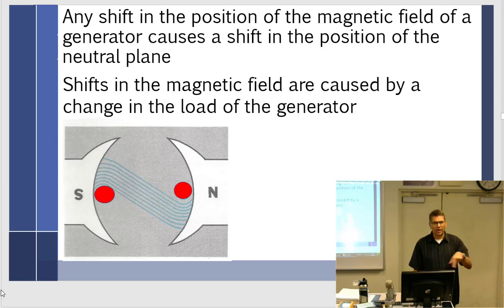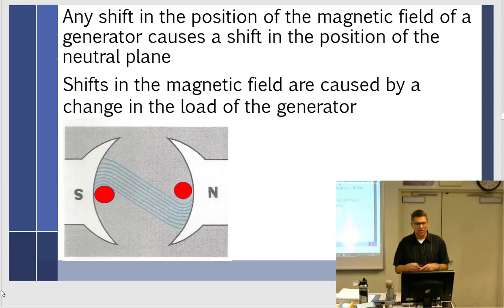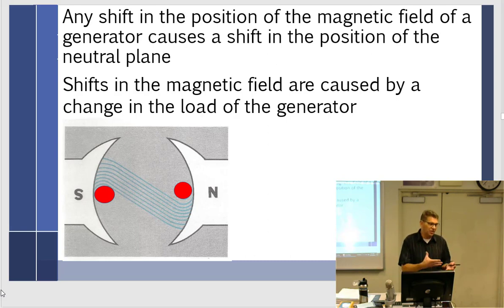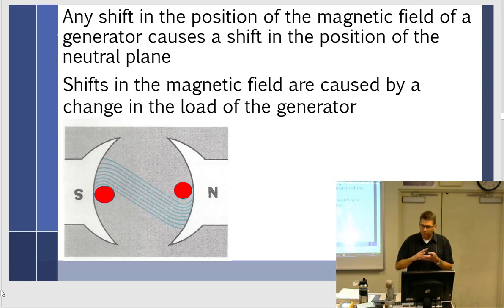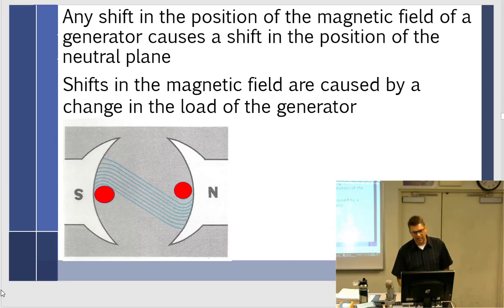That current flows through the loops of wire, creating more of a magnetic field, causing more distortion. That's what it means: caused by a change in the load. If I had no load, there would be no current flow and the neutral plane would go back to where it was. The neutral plane shifts with the load because the current flow in the armature increases its magnetic effect.